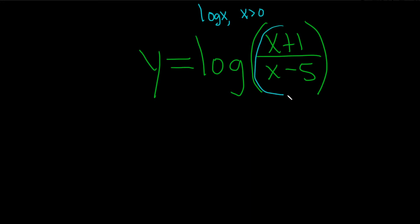So all of this stuff has to be greater than 0. The very first step is to take all of that, x plus 1 over x minus 5, and set all of that greater than 0.